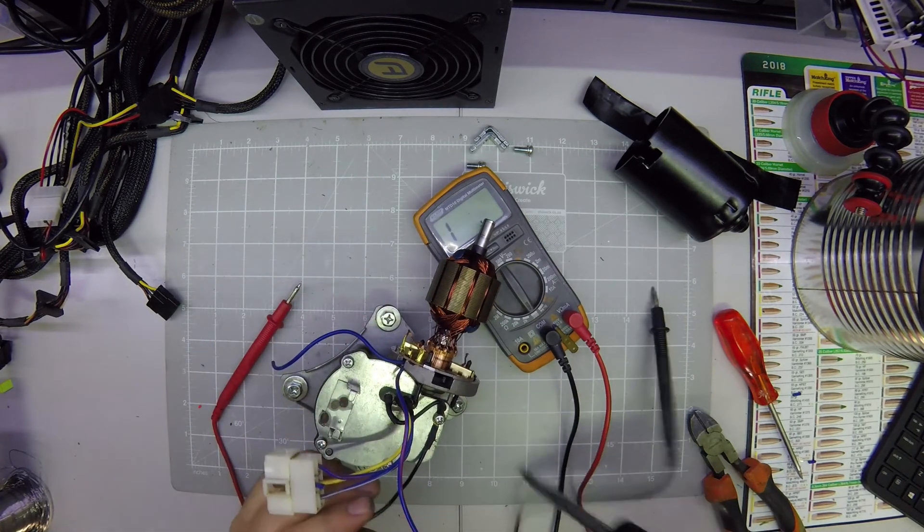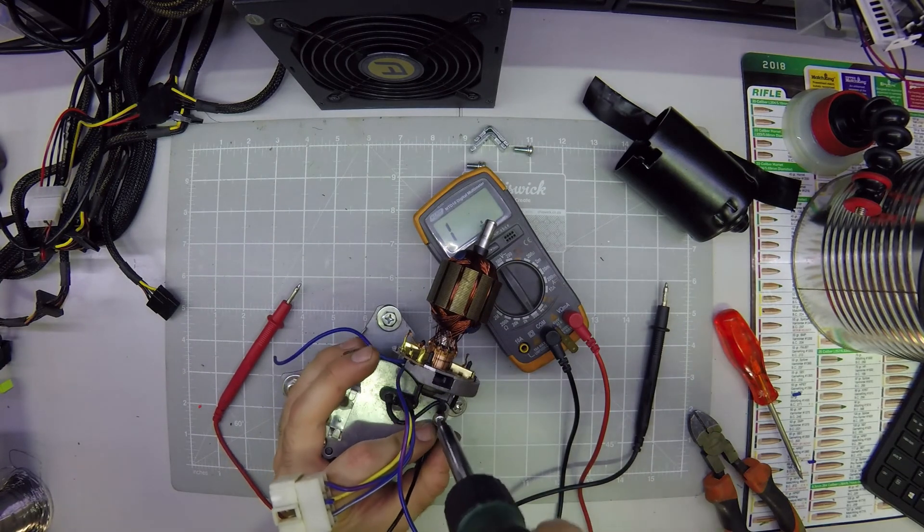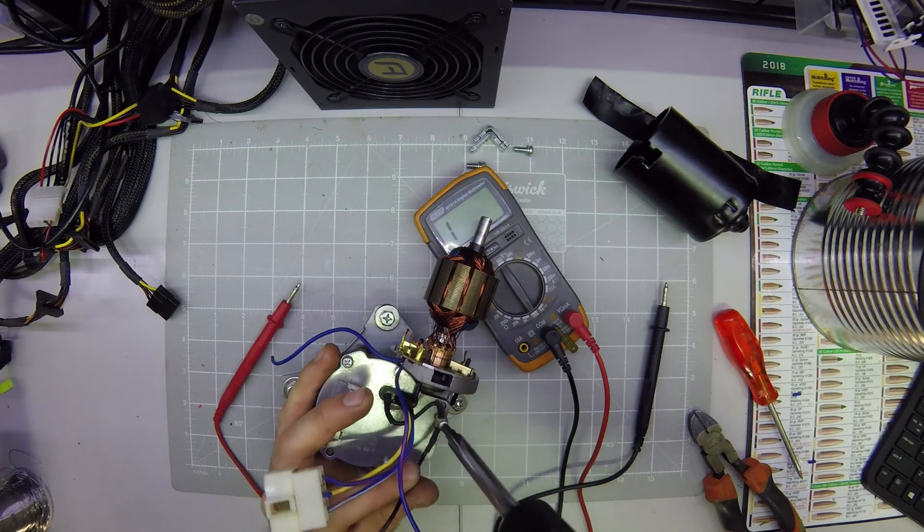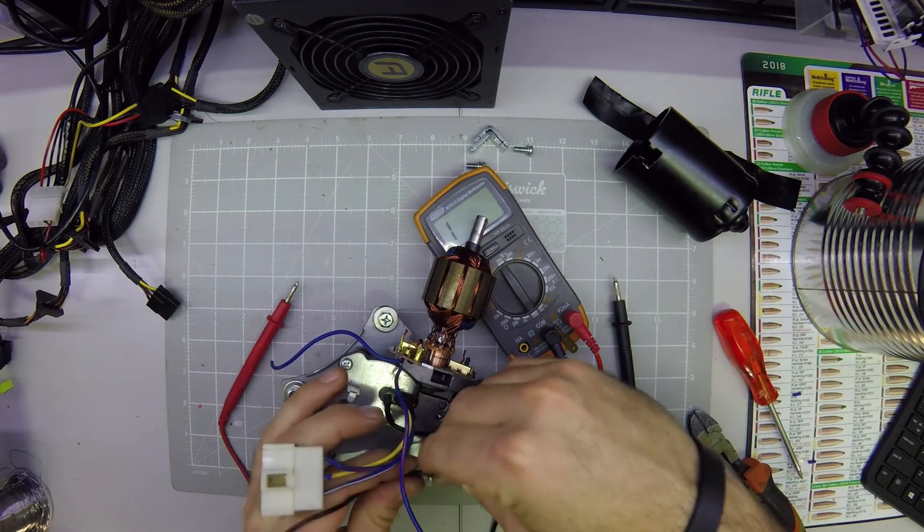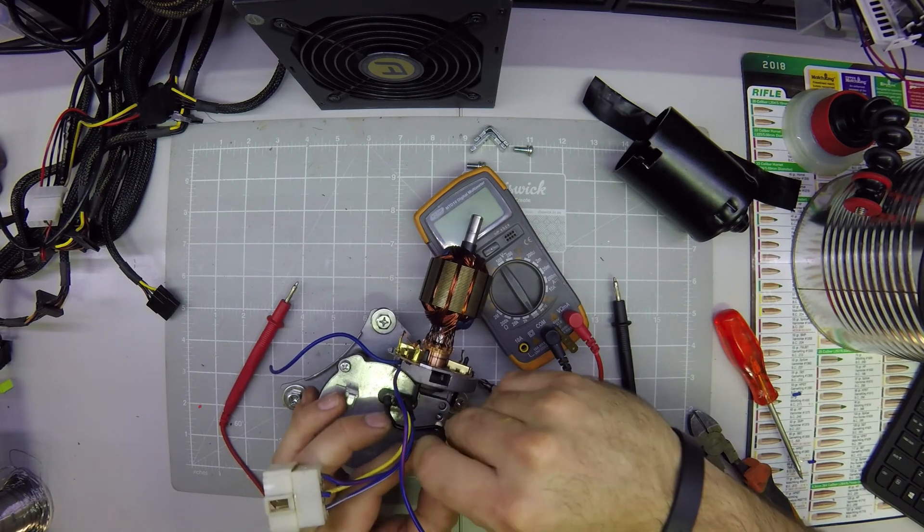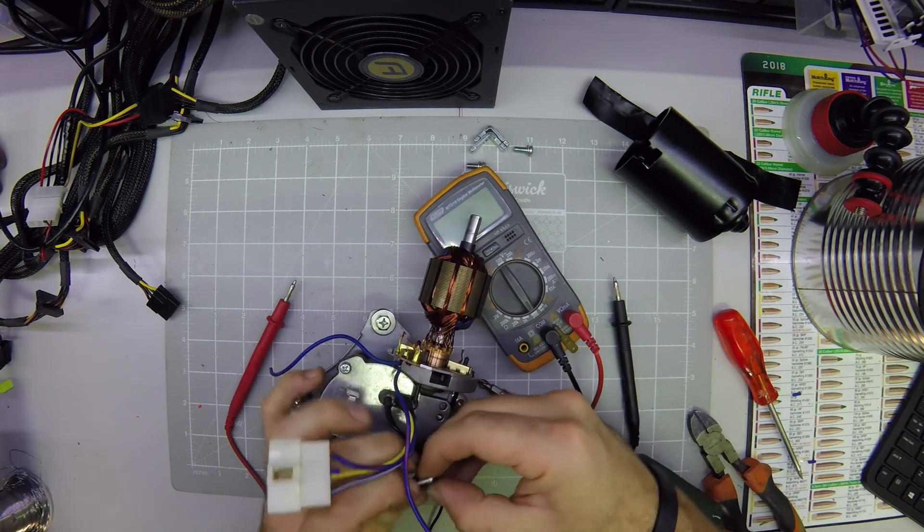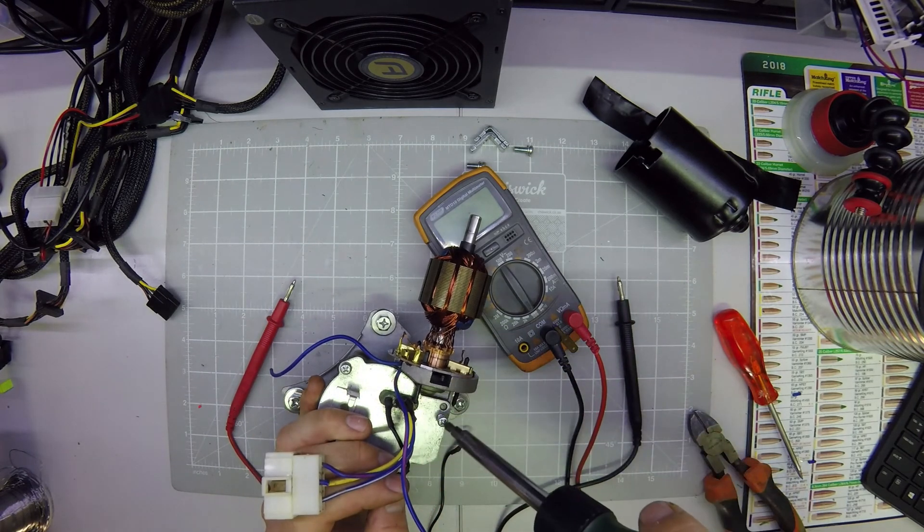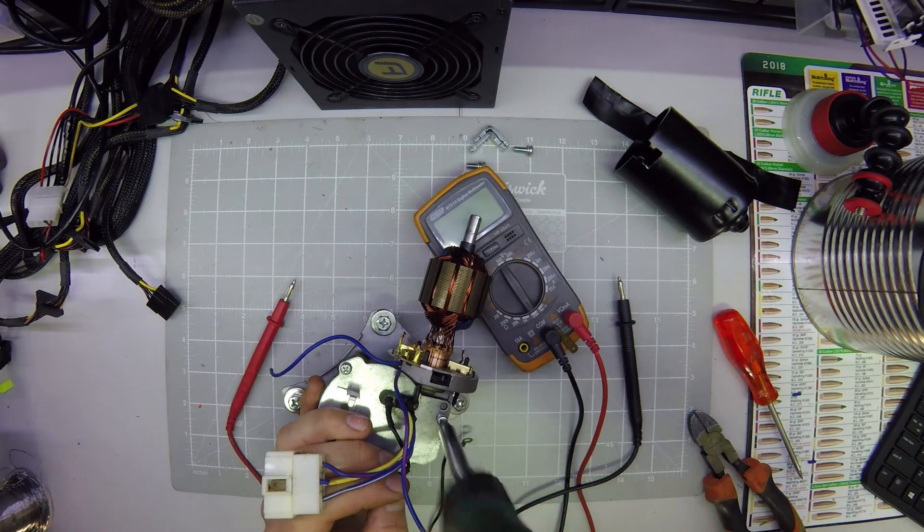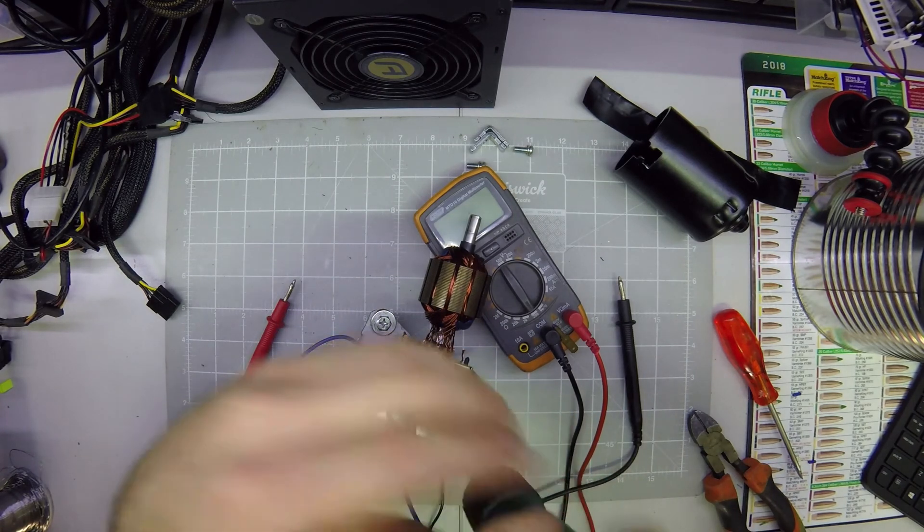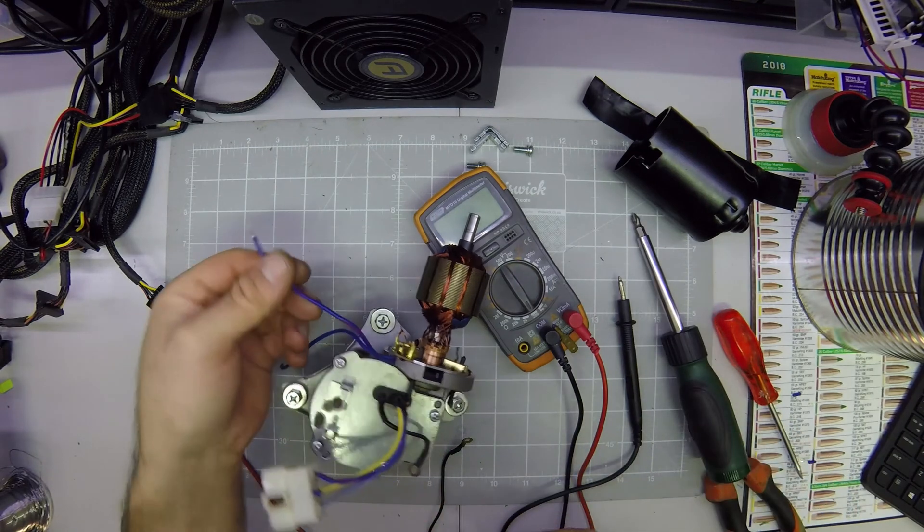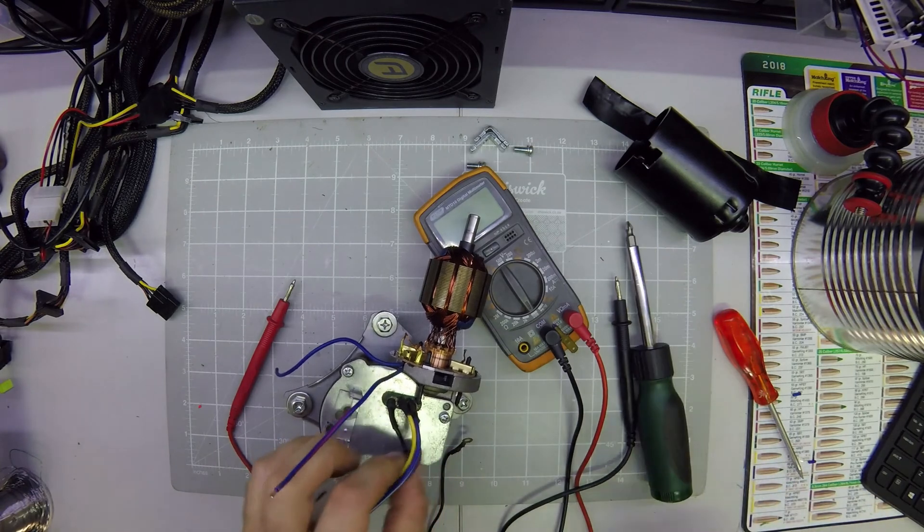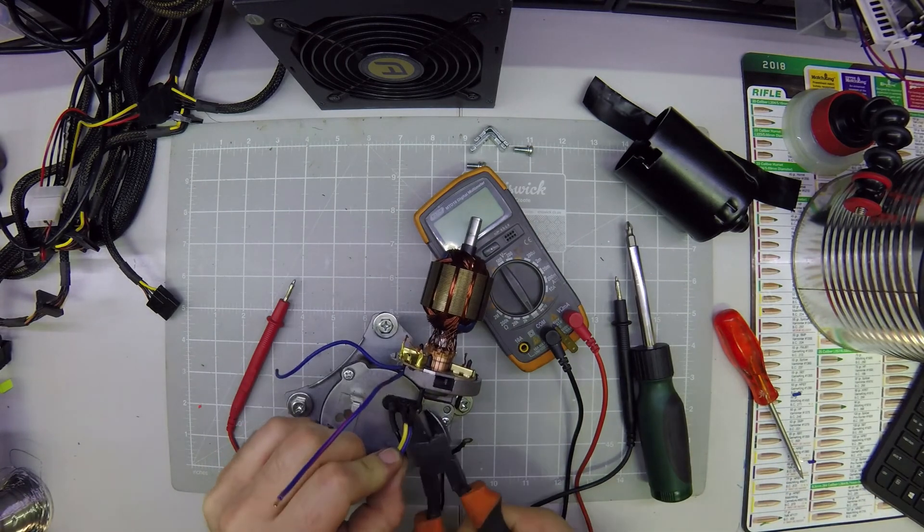So what I'm going to do is I'm going to recycle this wire that we've got on the outside. Now that we've identified which wire the motor actually uses, we can go ahead and get rid of these other wires. So I'm just going to chop them off right here.